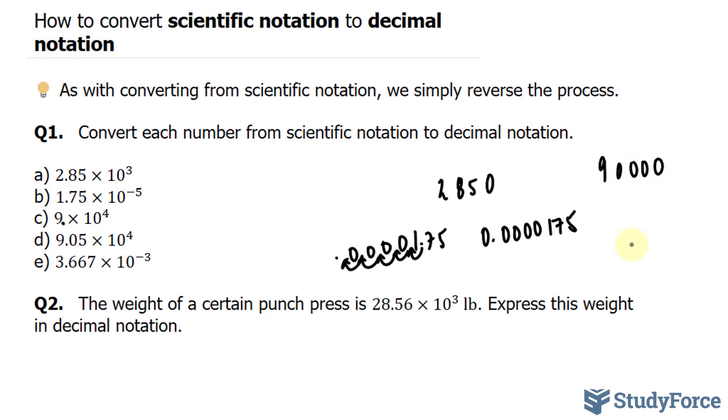Question D is more of the same. Move this decimal place 4 times. That gives us 90,500.